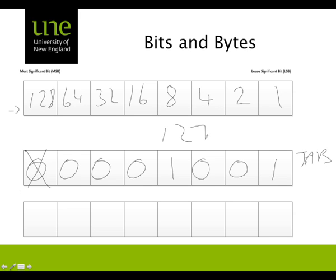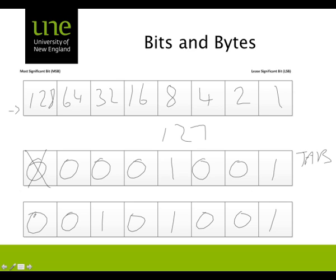Let's try another one. We want to represent the number 41. That would require a 32, an 8, and a 1. Set all the other bits to 0, and that's our number 41, or the character right parenthesis.